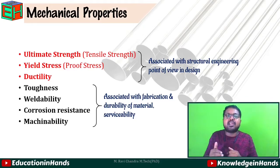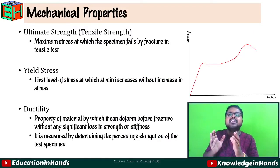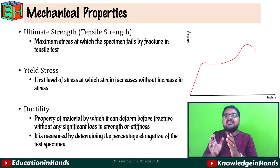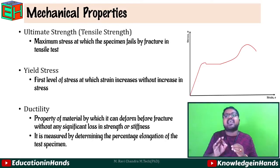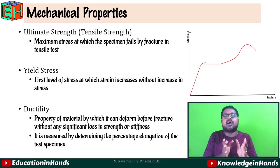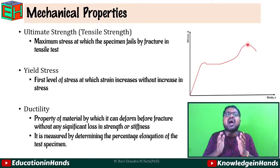First, ultimate tensile strength. Ultimate tensile strength is the maximum stress at which the specimen fails by fracture in a tensile test. Looking at the stress-strain curve for a mild steel specimen, the maximum or peak stress reached on the curve is called the ultimate strength or ultimate tensile strength.